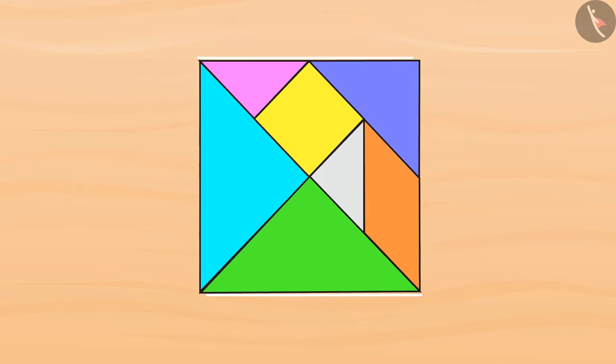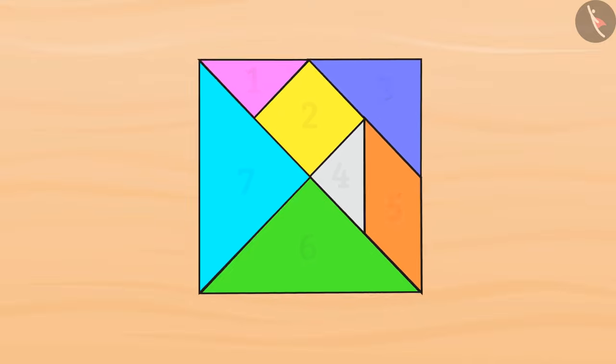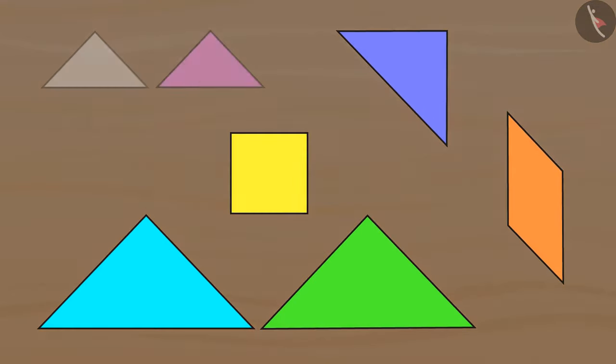Tangram consists of a square cut into 7 standard pieces: two small triangles, one medium sized triangle, two large triangles, a square, and a parallelogram.